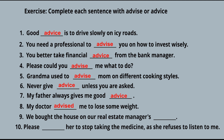Ninth: 'We bought the house on our real estate manager's ___.' You already have the verb 'bought,' so what comes in the blank should be a noun. 'We bought the house on our real estate manager's advice.' Tenth: 'Please ___ her to stop taking the medicine as she refuses to listen to me.' Here you get the verb advise. 'Please advise her to stop taking the medicine as she refuses to listen to me' — meaning please counsel, instruct, or warn her.